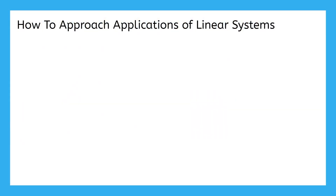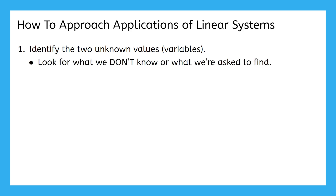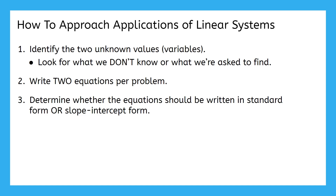Before we jump into our first example problem, let's take a moment to review and make a plan to tackle these application problems. Since we're working with linear equations, each problem should have two unknown values, also known as our variables. Identifying what the variables are at the beginning can help us stay organized throughout the rest of the problem. How can I tell what a variable is in an application problem? Well, the variables are going to be things that we don't know yet. Sometimes you can find them in the question based on what you're asked to find. We also know that since these are systems, we'll be writing two equations per problem. Lastly, we could be writing equations in standard form or slope-intercept form. What are some ways I might be able to tell which type of equations I should write?